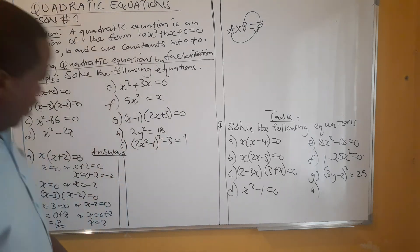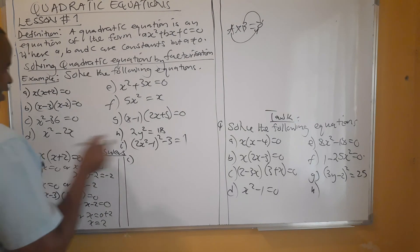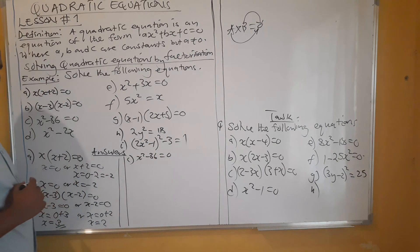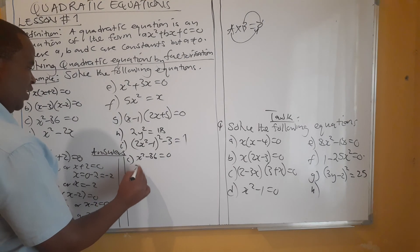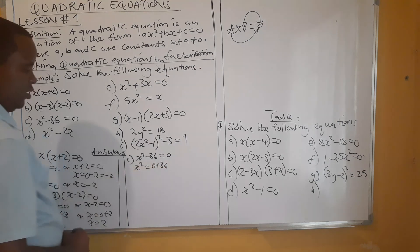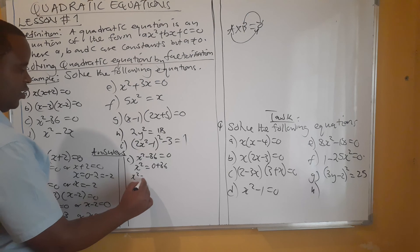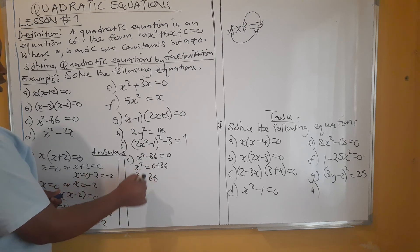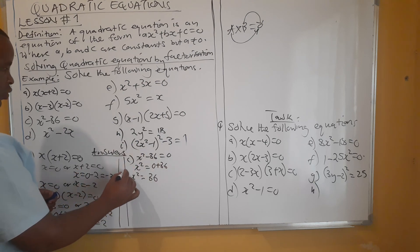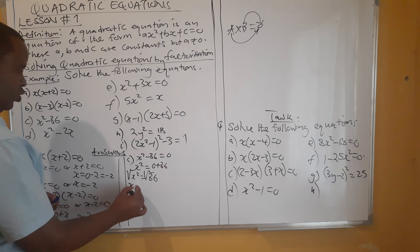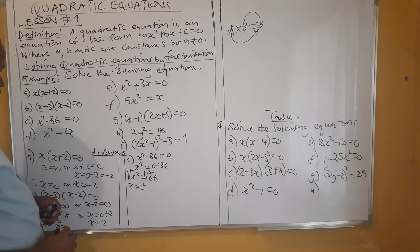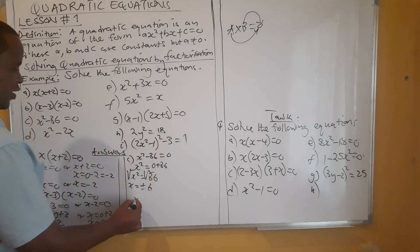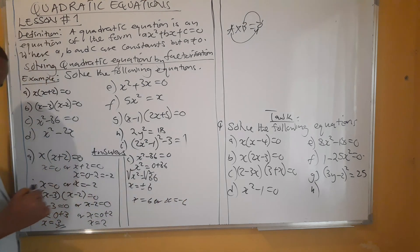Let's go to C. It says x squared minus 36 is equal to zero. We can apply two approaches. First, we can say x squared is equal to 36. There is a power of 2 here, so you must square root both sides. When you introduce a square root, there are two possible answers: plus or minus six. So x equals positive six or x equals negative six.